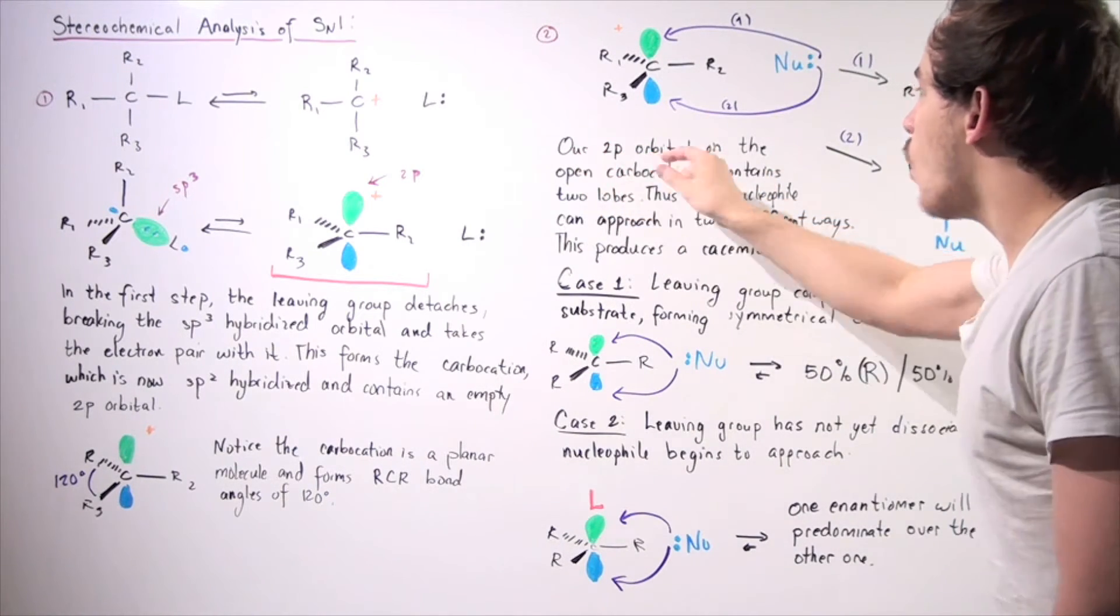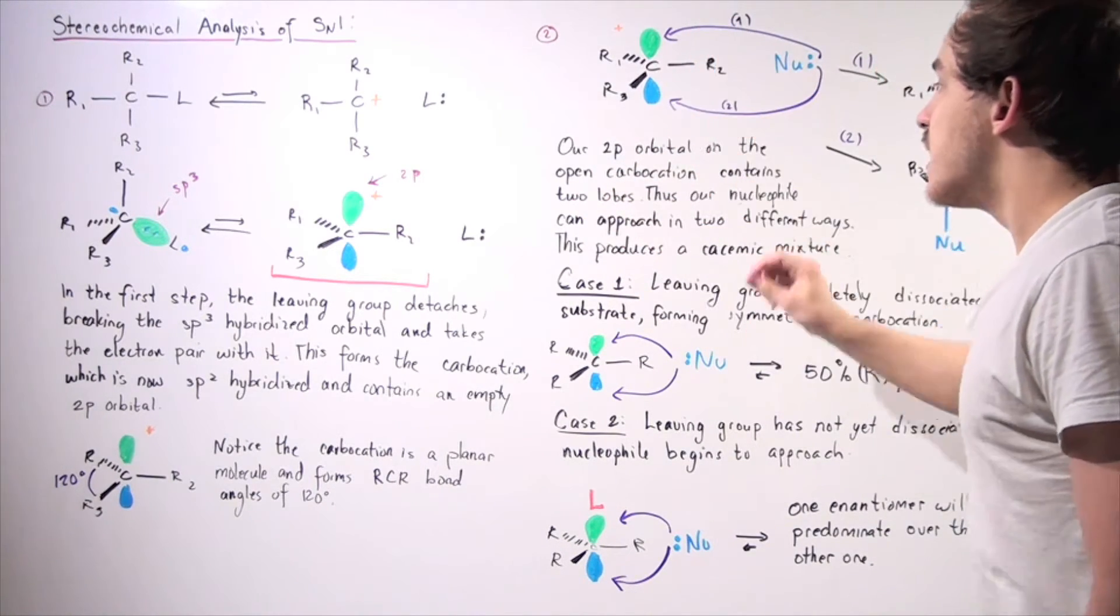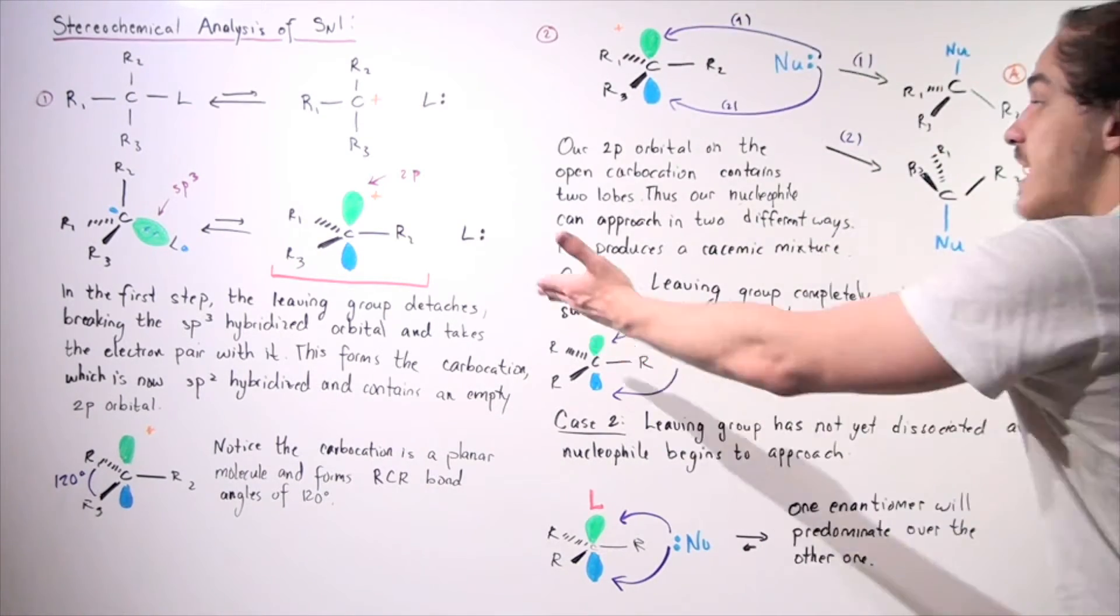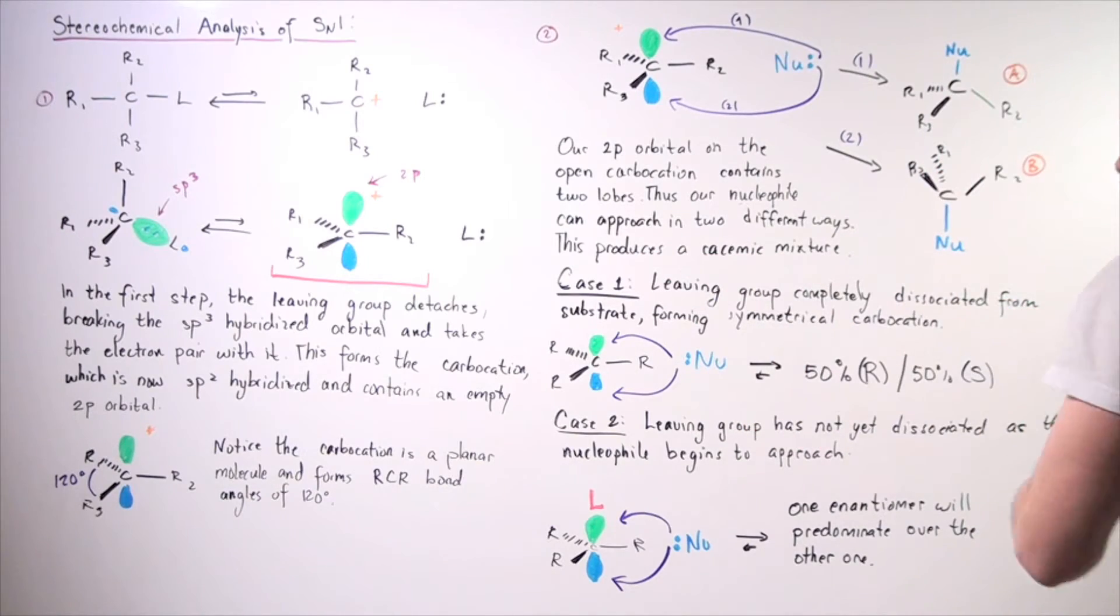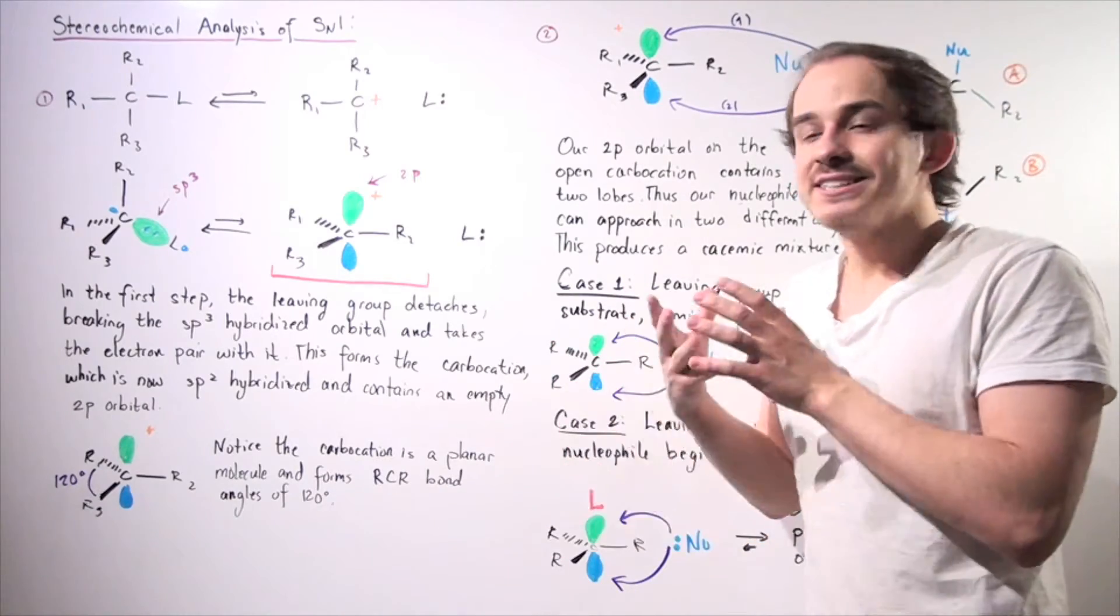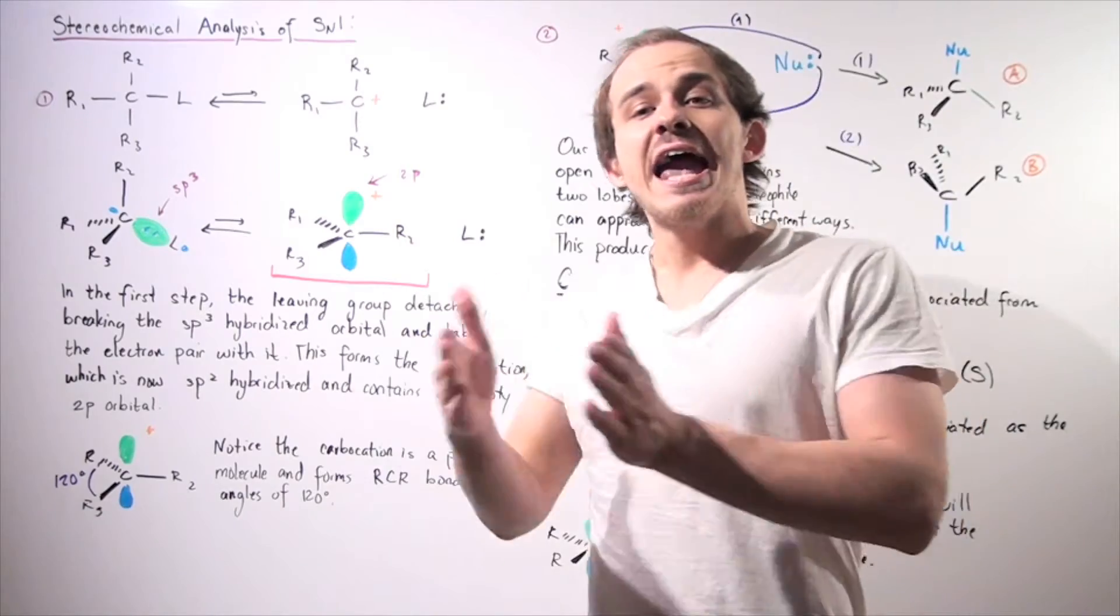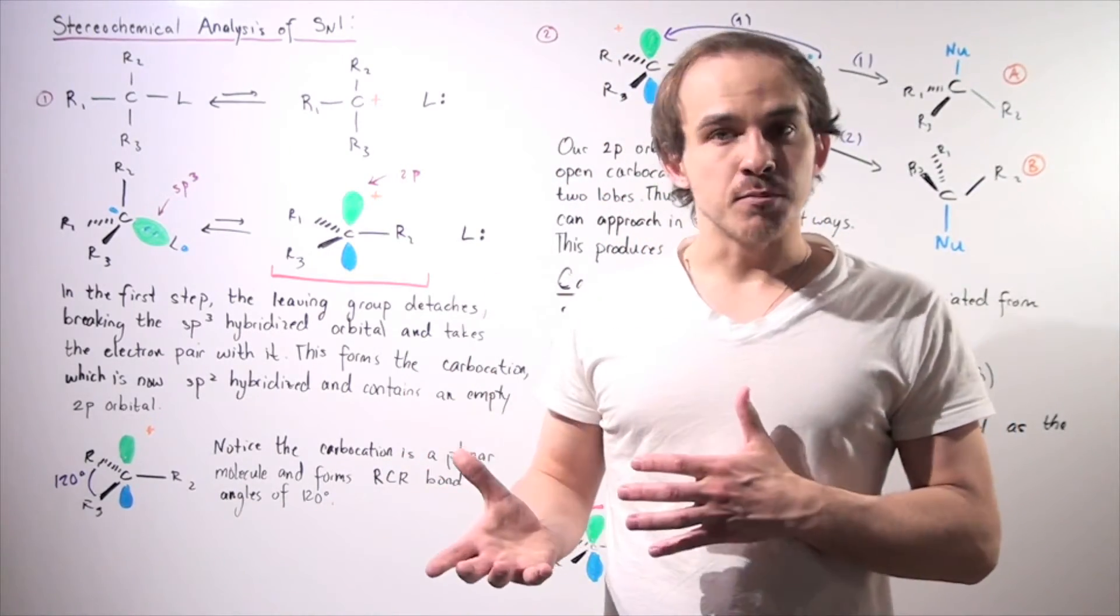So, our 2p orbital on the open carbocation contains two lobes. Thus, our nucleophile, which contains a lone pair of electrons, can approach in two different ways, from top and from bottom, and this produces a racemic mixture. Now, my question is, what type of racemic mixture is produced? Is it 50% of one enantiomer and 50% of another enantiomer, or some other ratio of enantiomers?